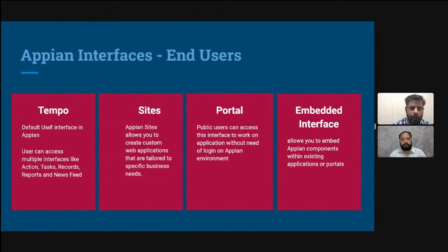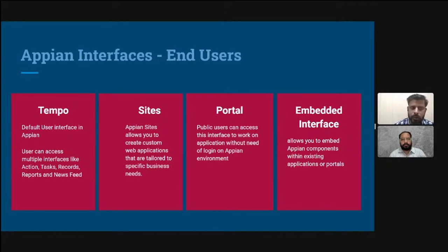Now, end user interfaces. Appian provides four types of end user interfaces: Tempo, Sites, Portal, and Embedded Interface. Tempo is the oldest and default user interface provided by Appian. Its overall look and feel is set up by Appian — you cannot change it.